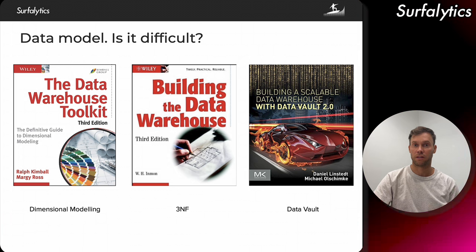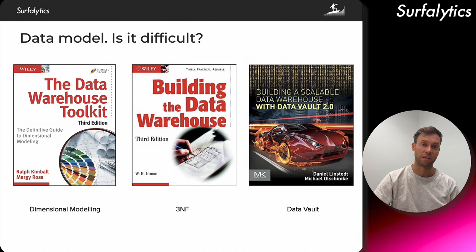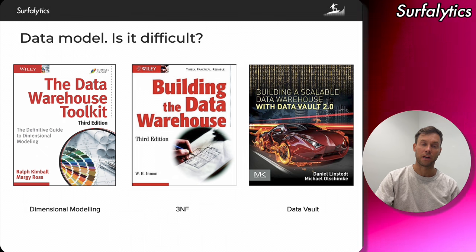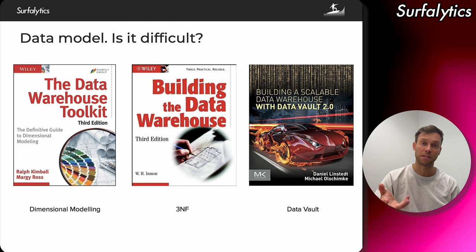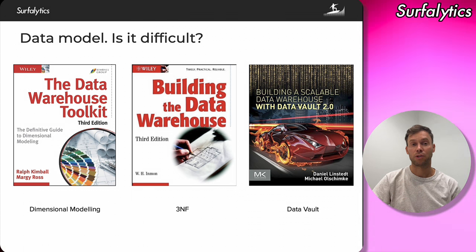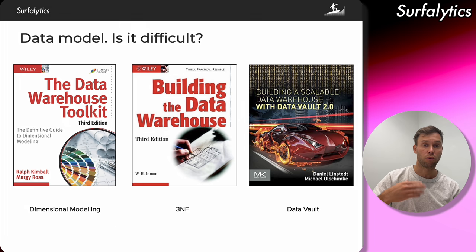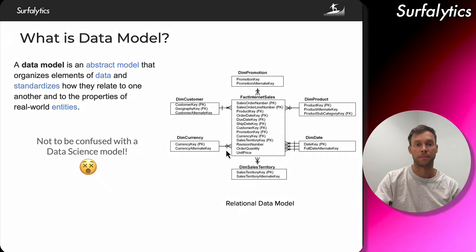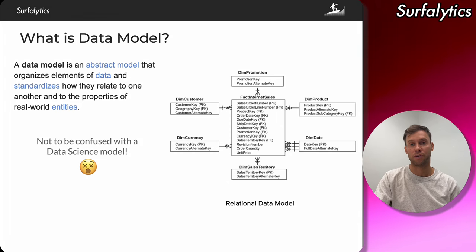An alternative is Bill Inmon, another father of the data warehouse. His book is Building the Data Warehouse. His main idea is third normal form. The data mart is not that complicated — it's a logical area in your data warehouse or database. For example, it could be just a schema dedicated to marketing analytics. This example of a data model could be a data mart related to FAQ Internet Sales; it's just a logical term.